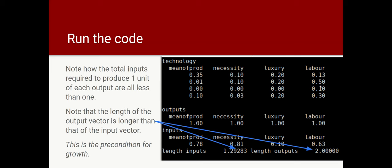So, here's the matrix again. This is the output, one of each. And these are the inputs that will be required to produce it. And see how the vector lengths have increased. The length of the output vector is 2. Well, that's a length in four-dimensional space. The components are obviously 4. Take the square root, you get 2. And the input length is less than that. So that's a precondition for growth. The economy uses less means of production and labour than it produces.